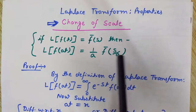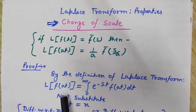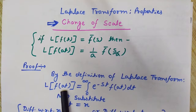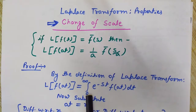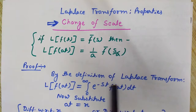We will see it with the proof. So let's see how to get this. By the definition of the Laplace transform, we know that the Laplace transform of f(at) would be the integral from 0 to infinity of e to the power minus s*t times f(at) dt. So in place of f(t) we have here f(at) as our function.